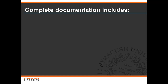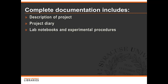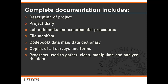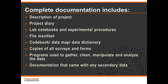Complete documentation includes a description of the project — you can think of this as a somewhat extended abstract. A project diary in which you and all of your team members make a record of what was done, why, and how. Any lab notebooks and or written procedures. A file manifest, which is a list of all the files associated with your project. A codebook, data map, or data dictionary, which are all terms for basically the same thing — at its most basic, a codebook is a list of all the variables in your data, what they measure and how. Copies of all surveys and forms used to collect data. All programs used to gather, clean, manipulate and analyze your data. Any documentation that may have come with secondary data that you might have used. And if you're creating or using any databases, the database schema associated with it.